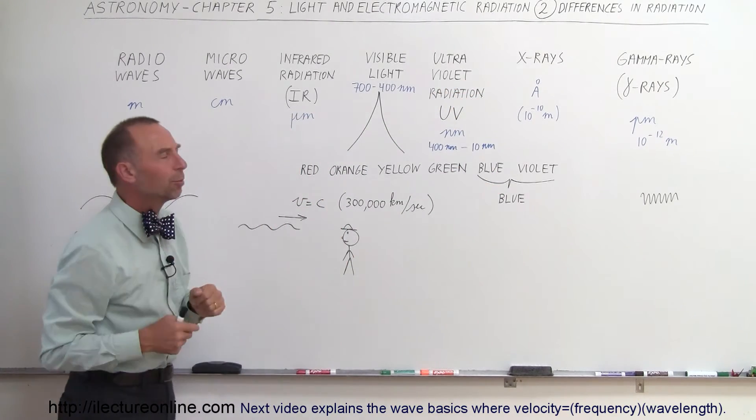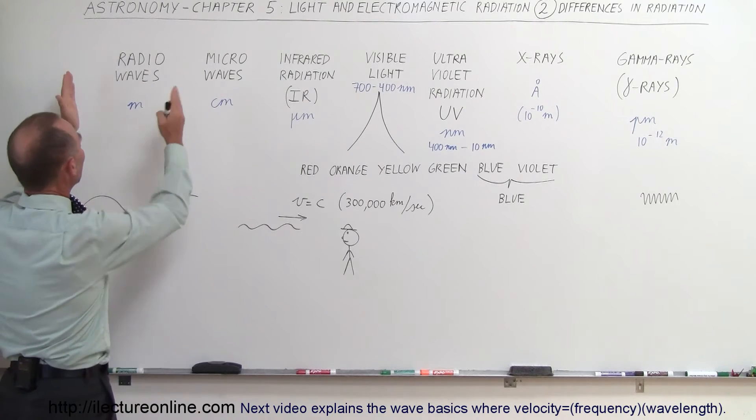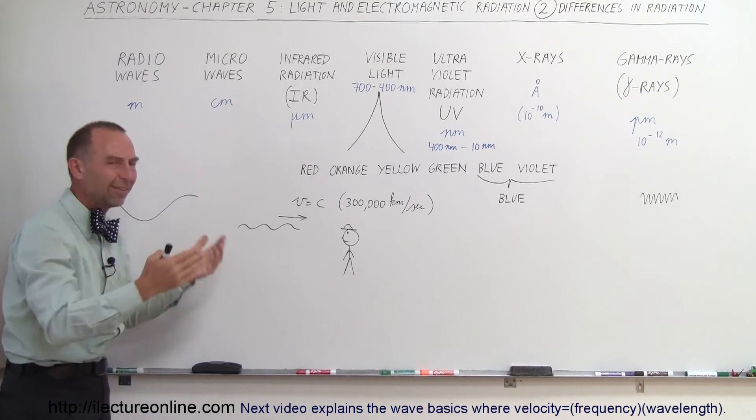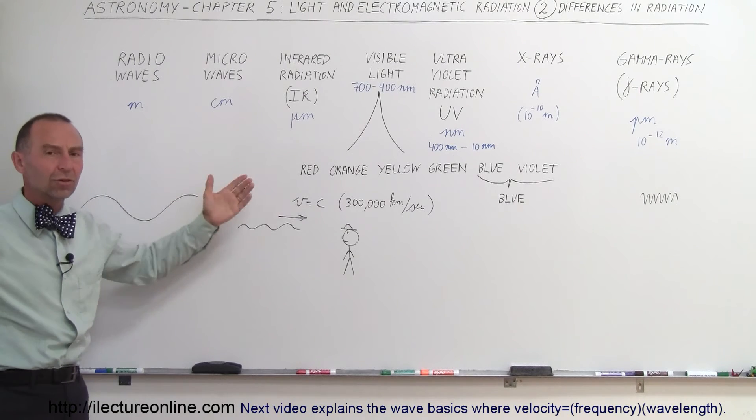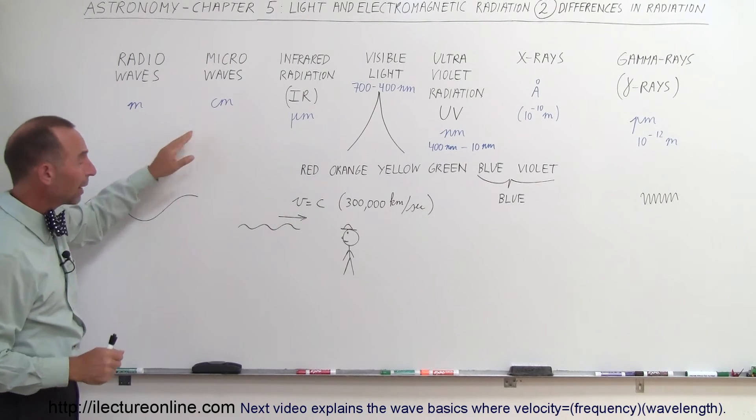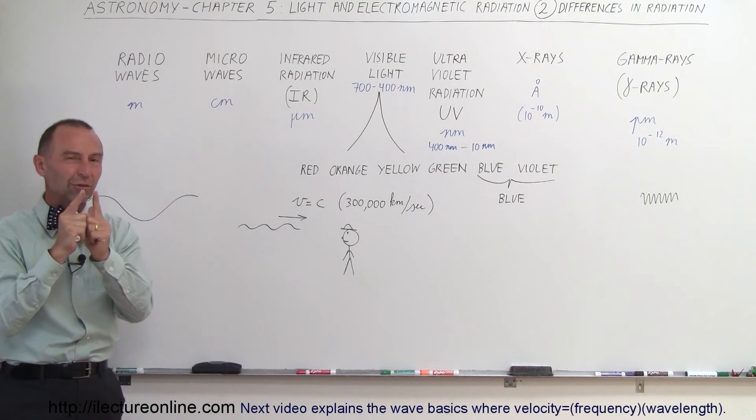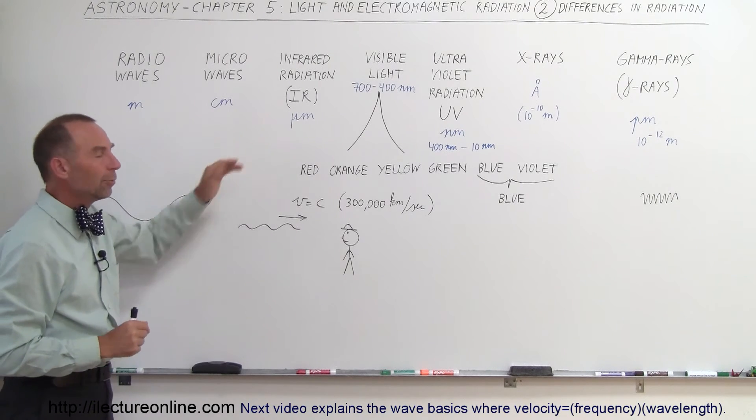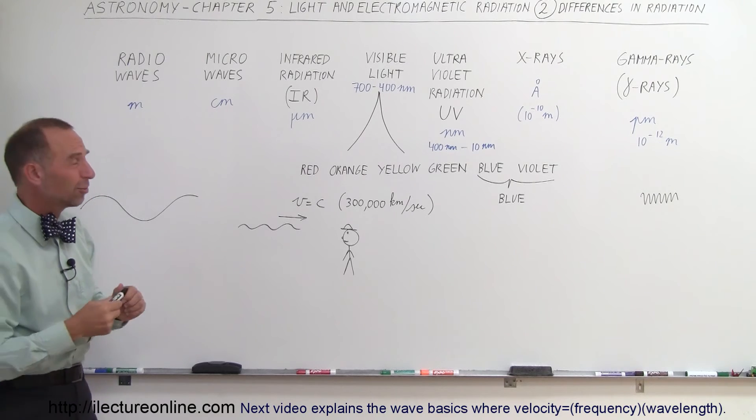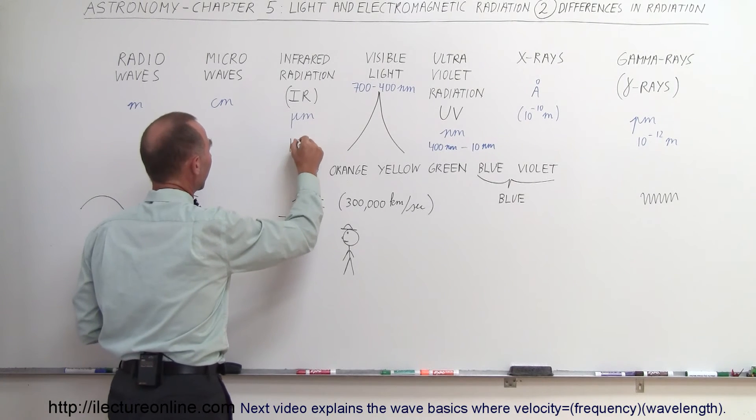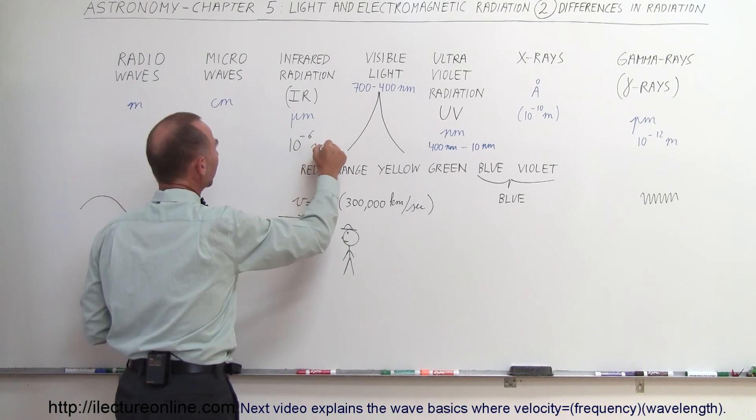There's really no hard boundaries between them either. We tend to think of radio waves in terms of meters, tens of meters, or hundreds of meters long, as long as a football field, down to the size of a meter. Microwaves tend to be fairly short in the range of centimeters. Infrared radiation tends to be in the order of micrometers, so 10 to the minus 6 meters.